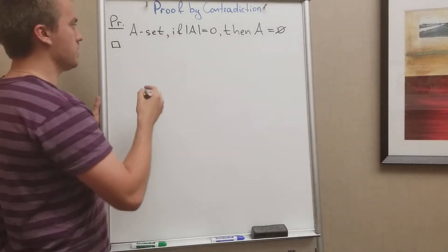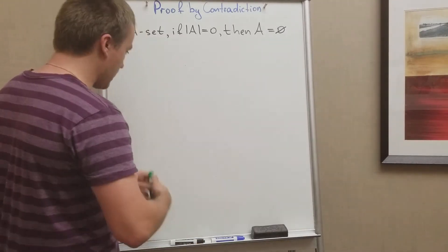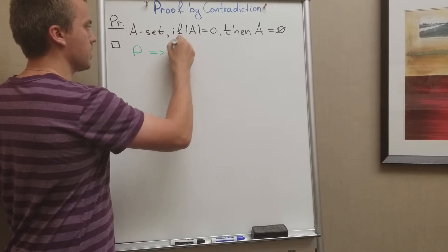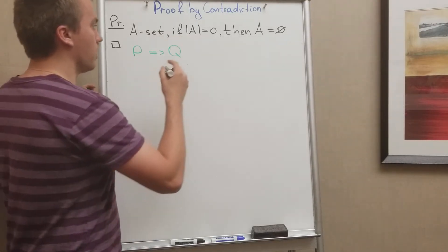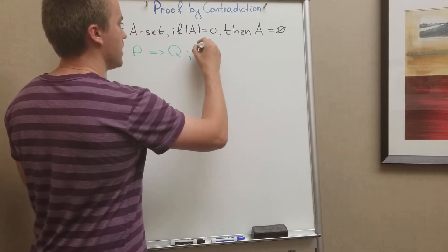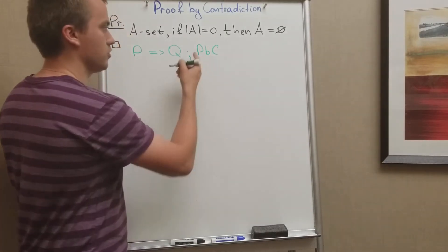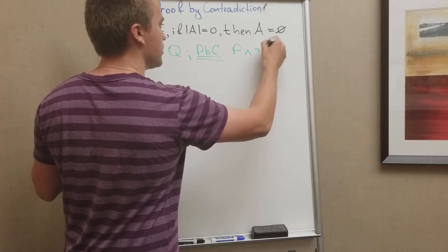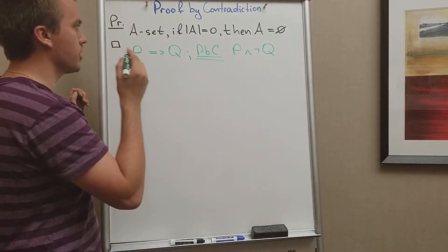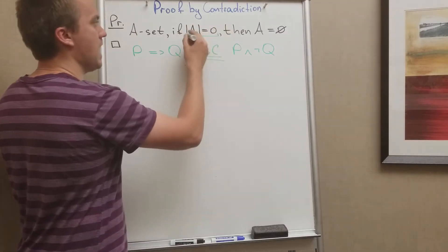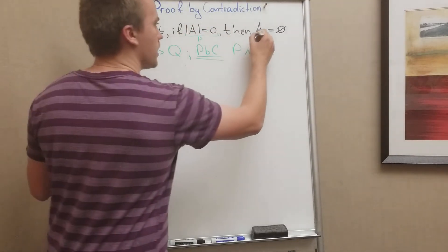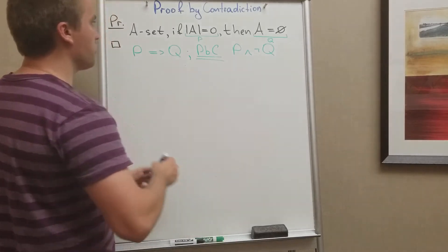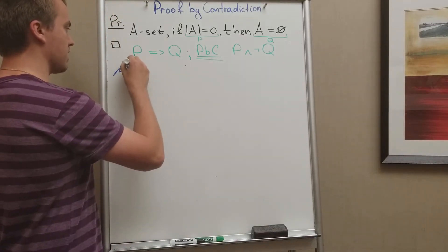What does proof by contradiction mean? In a direct proof, we have proposition P which implies proposition Q. In proof by contradiction (PBC), we instead take proposition P and the negation of proposition Q. So here, my proposition P is: the cardinality of A equals zero, and my proposition Q is: A is an empty set.